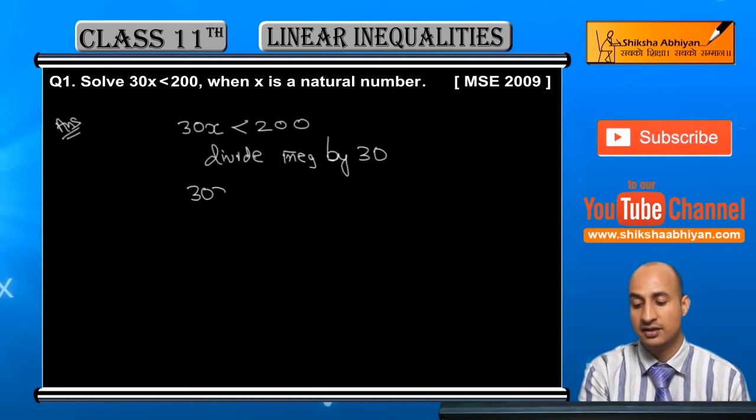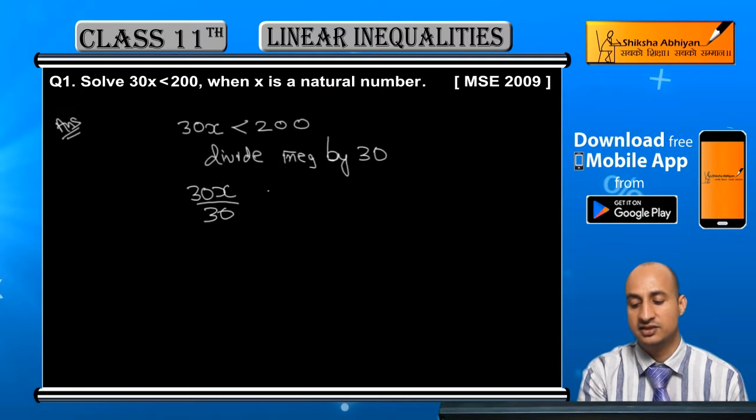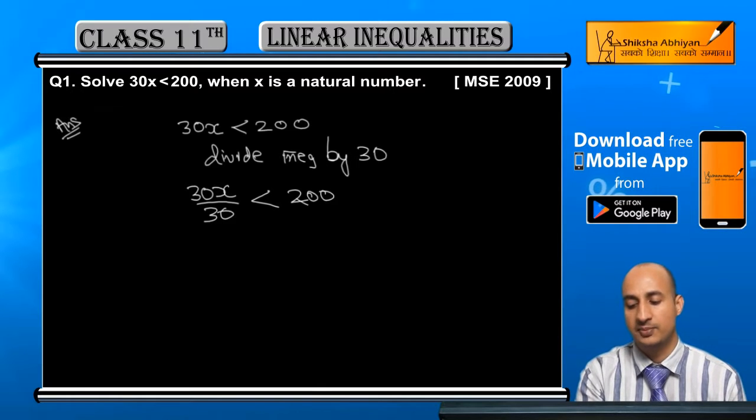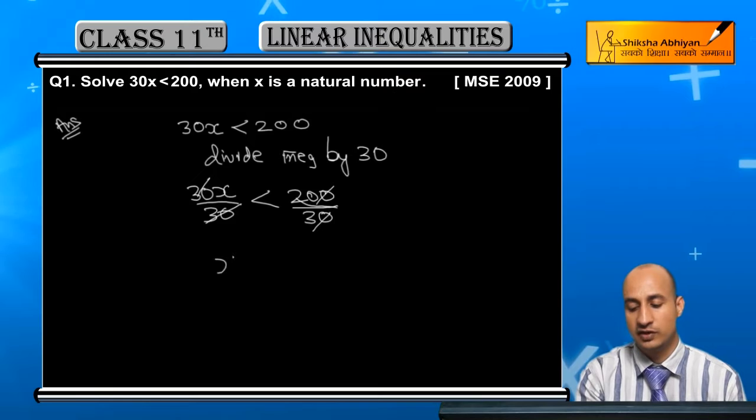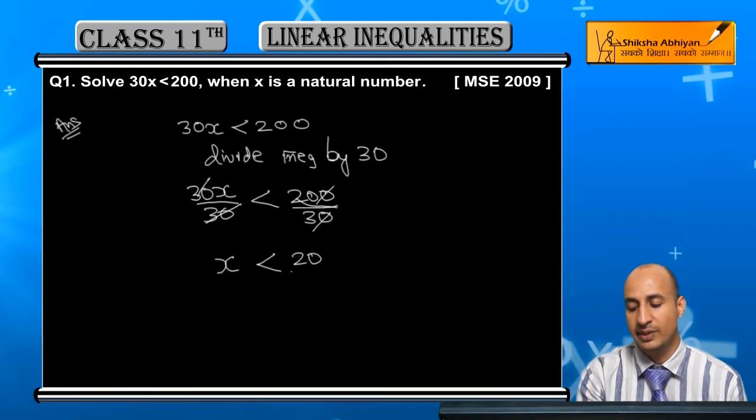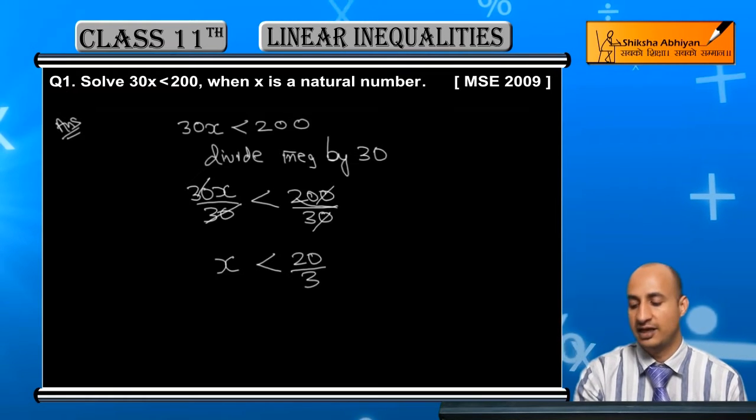This will be 30x upon 30 is less than 200 upon 30. Now 30 cancel out, you will get x is less than 20 by 3.